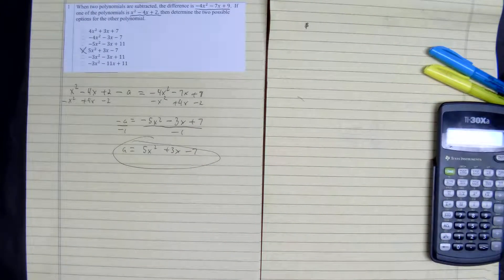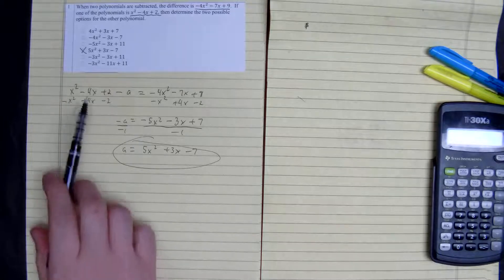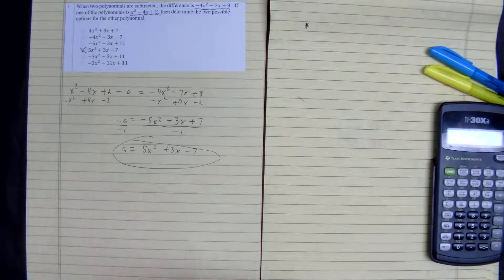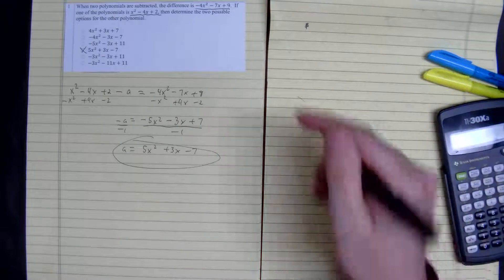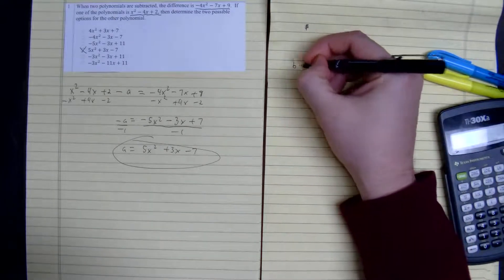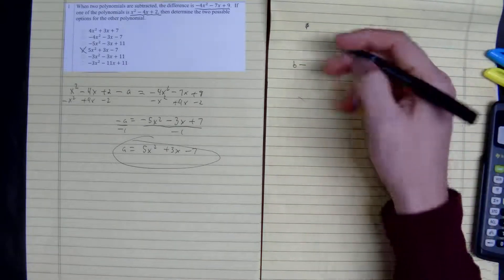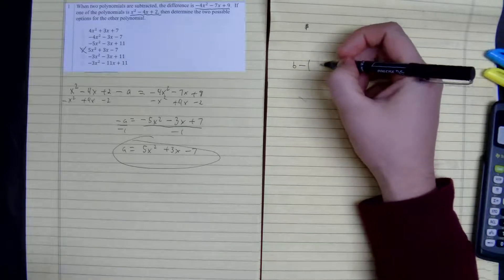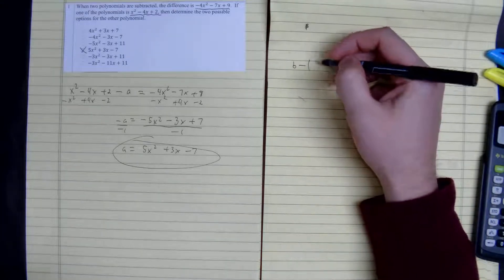So we want to find equation 2, and we know this is one of the polynomials, so let's do it again. But let's flip it. Let's make it equation B, take away the equation.